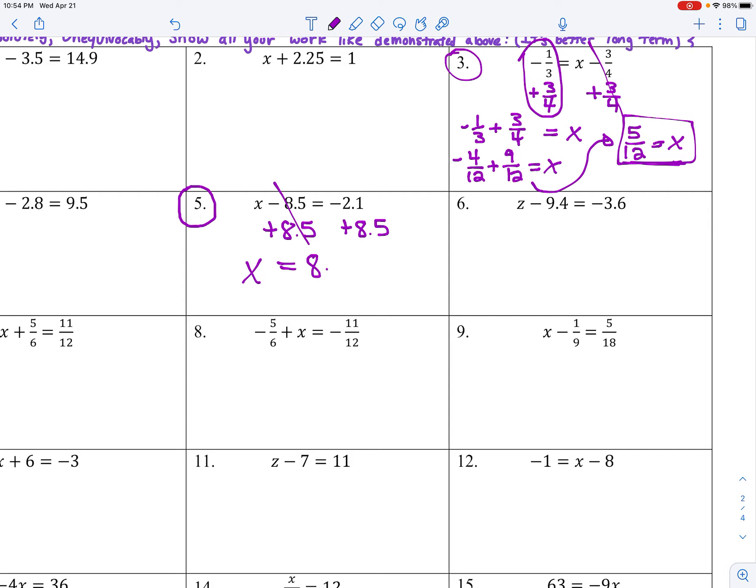And then on the right side negative two point one plus eight point five. Now I'm going to write it as eight point five minus two point one. There's different ways to represent it. You could have said negative two point one plus eight point five. Now I'm going to do some side work here. If you can do it on your own or in your head to take eight point five minus two point one, that's going to be nice because I don't need to borrow anything. It's going to be positive six point four. There's an example that has decimals.